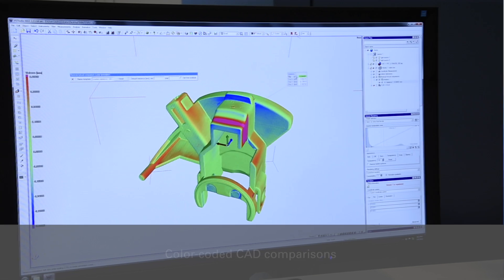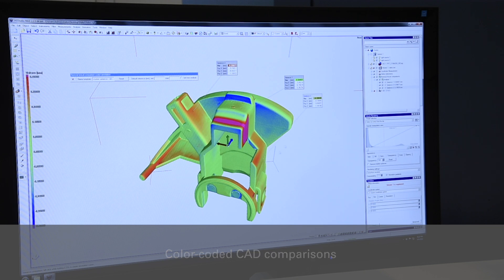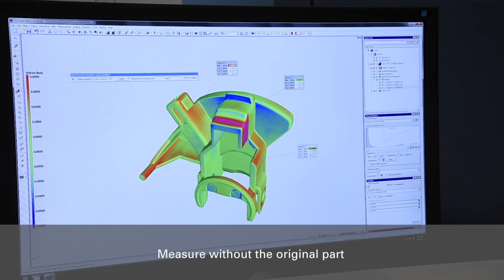Regarding wall thickness, you can conveniently perform color-coded CAD comparisons. With archived CT data, you are able to continue taking measurements without the original part. This also allows you to execute reverse engineering.